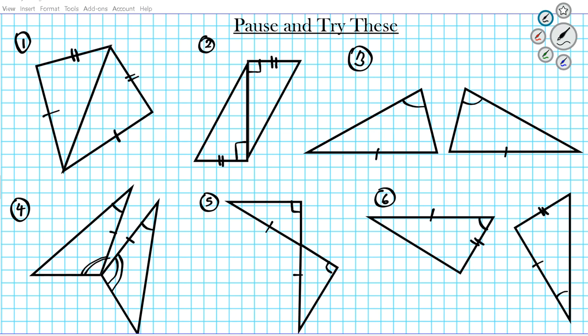Now it's your turn to try out some practice problems. We have six triangles — the same instructions as before: try to show if they are congruent, and if they are, state why using one of the four congruency postulates. Pause the video and work on these six problems. When you're done, click play and we will display the correct answers. Quick correction on number five: those are 90-degree angles and the assumption is these are two intersecting lines making vertical angles, which are congruent.